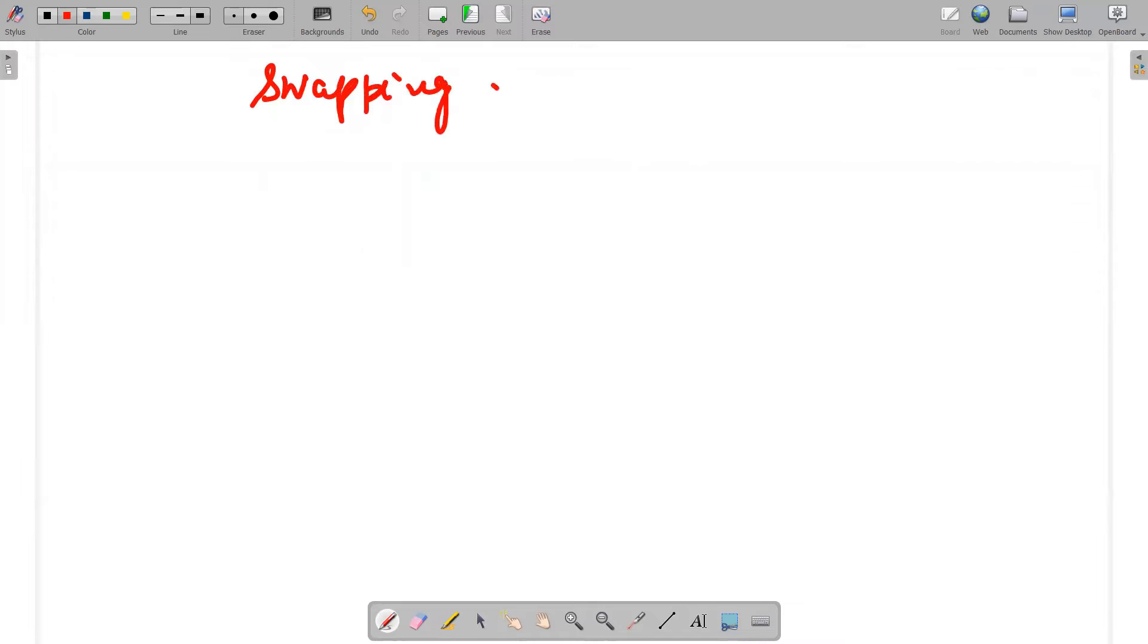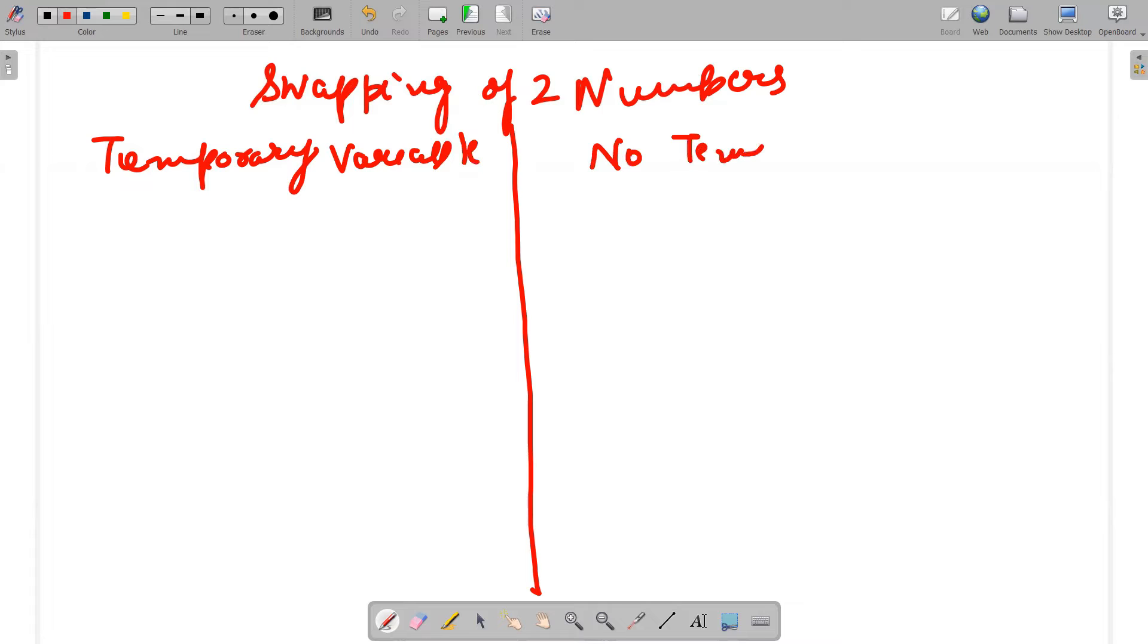So if I take this example, guys we all know that this can be done in two ways: if I use temporary variable and if I don't use temporary variable.